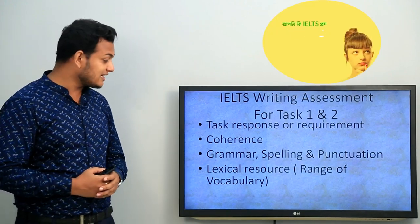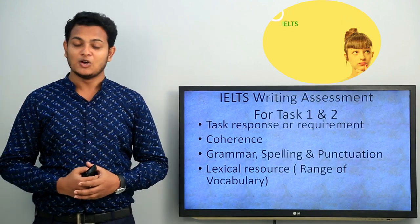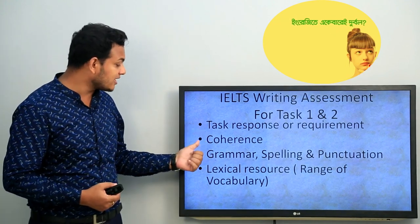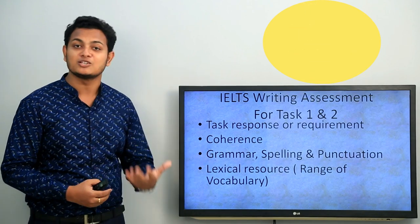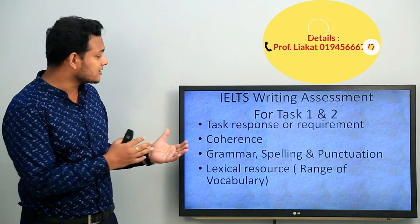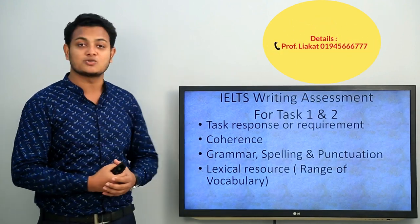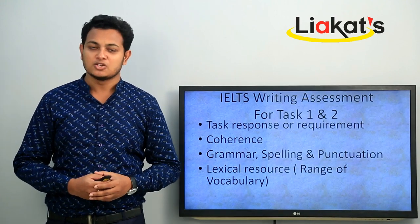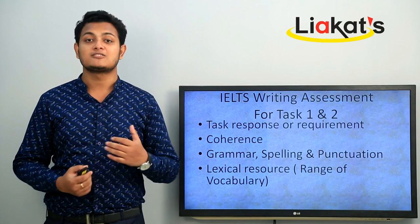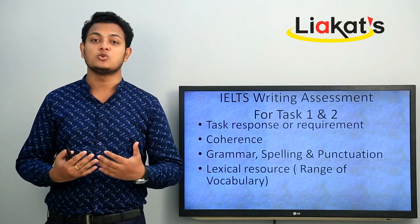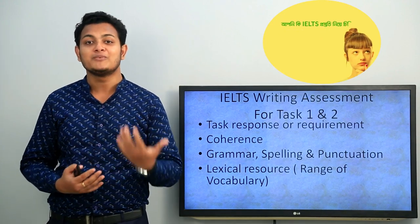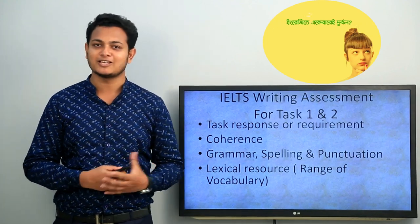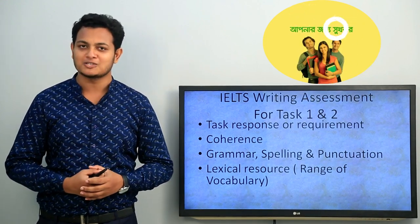Finally, the most important criterion the IELTS examiner uses to give you marks is lexical resource — that's the range of your vocabulary. Your mark depends on how you use vocabulary. Each criterion is marked out of 9. Try to use different kinds of vocabulary: the more synonyms and vivid expressions you use, the higher your score. I hope you have understood this assessment criteria for the IELTS writing module.